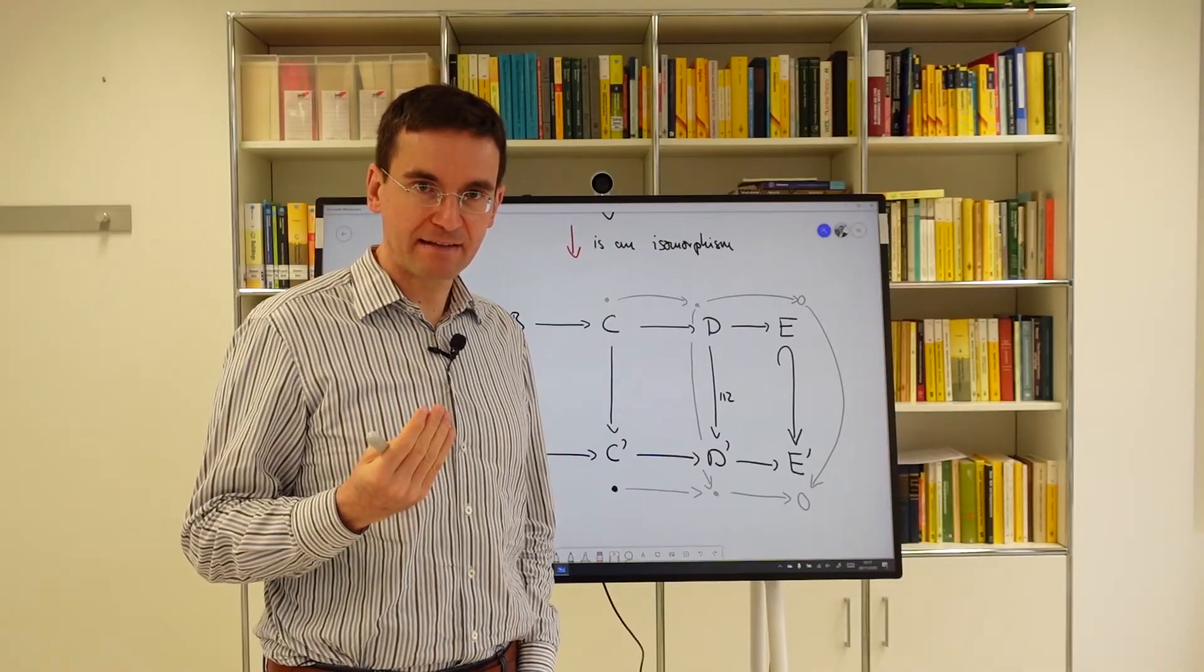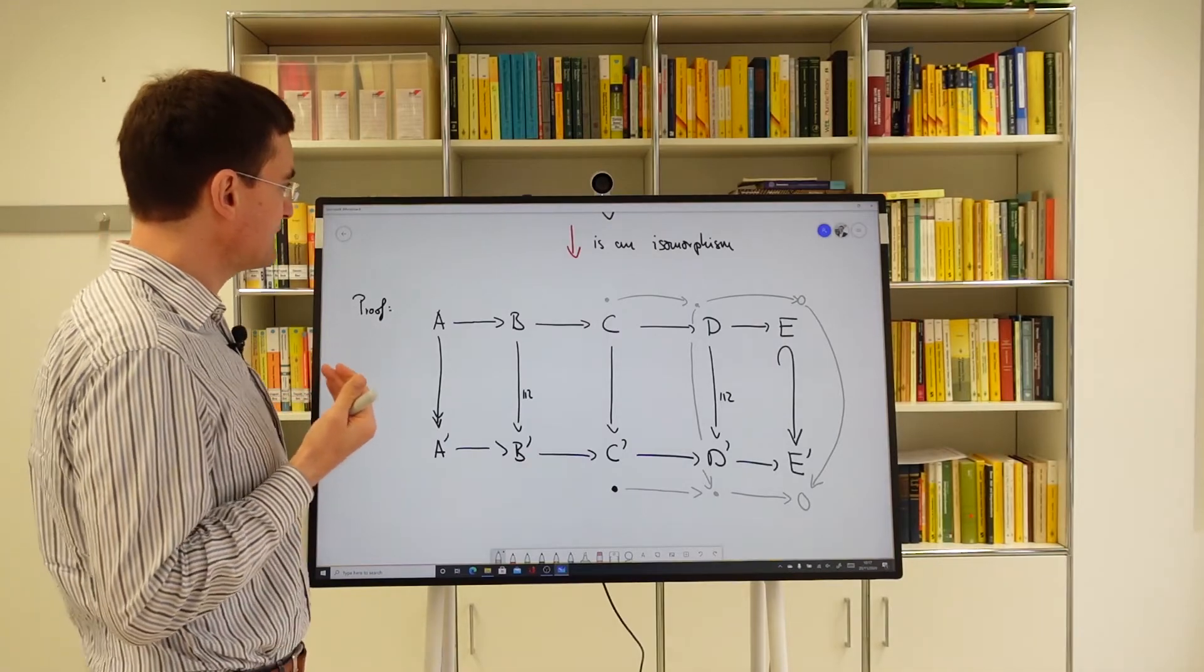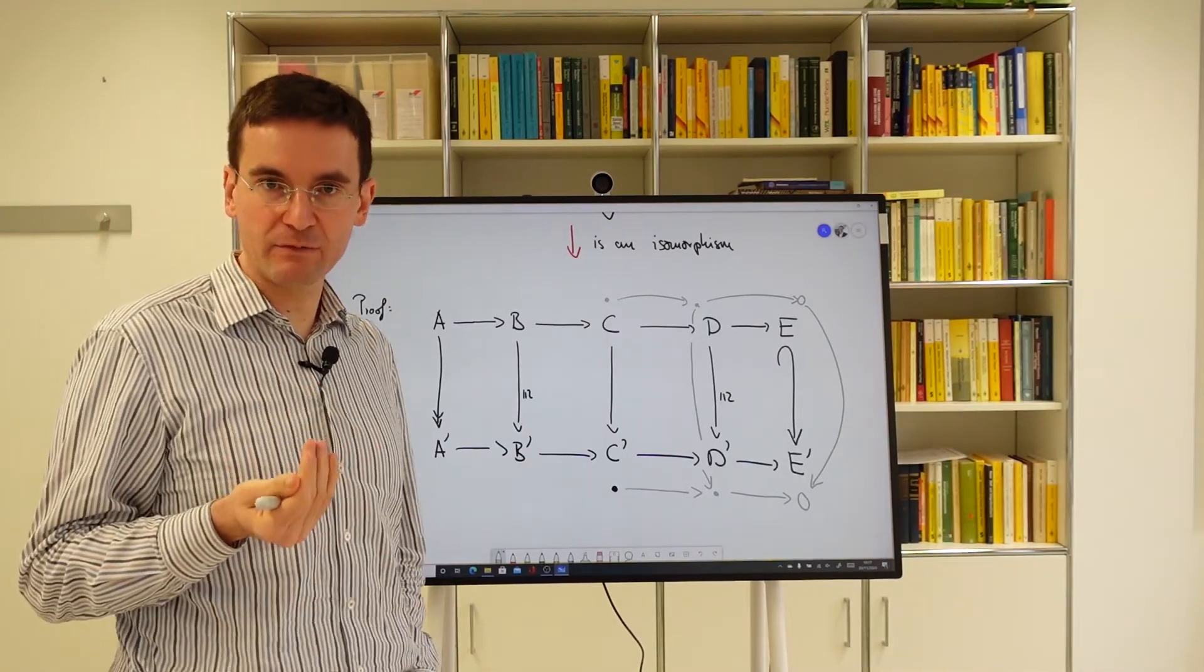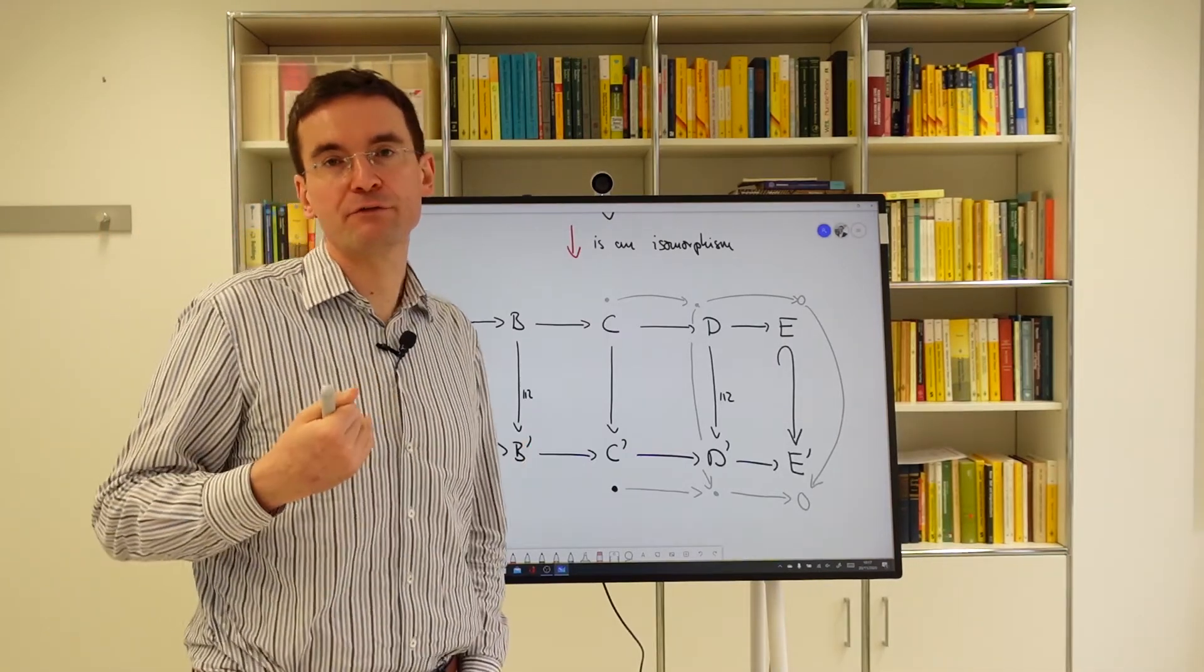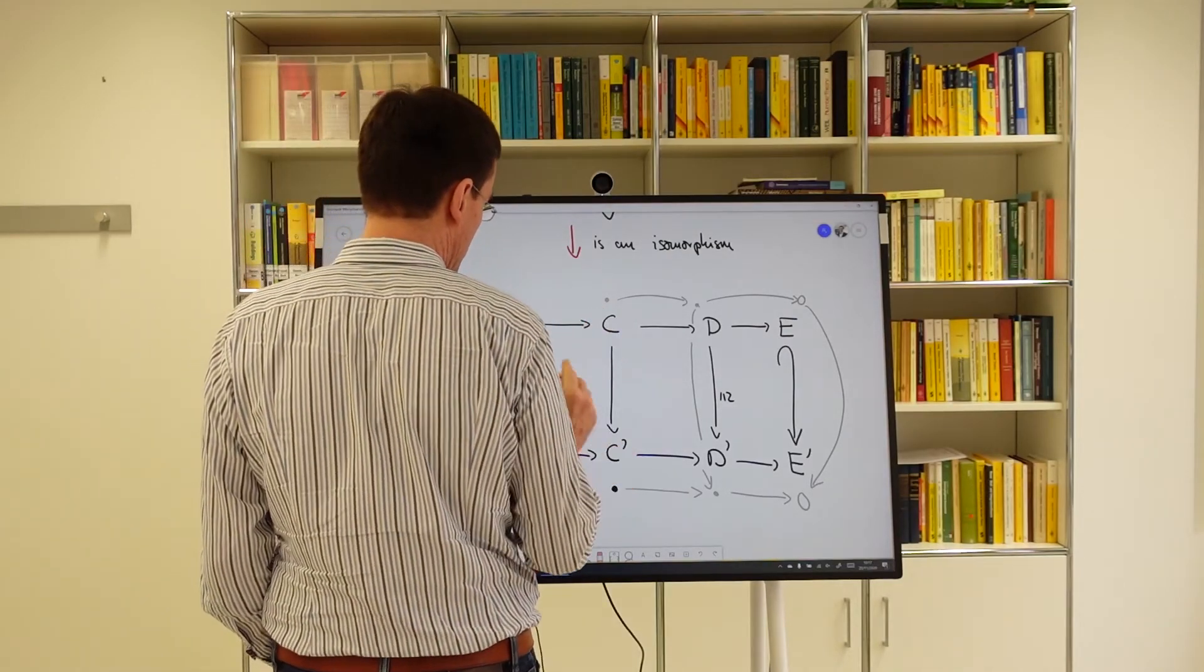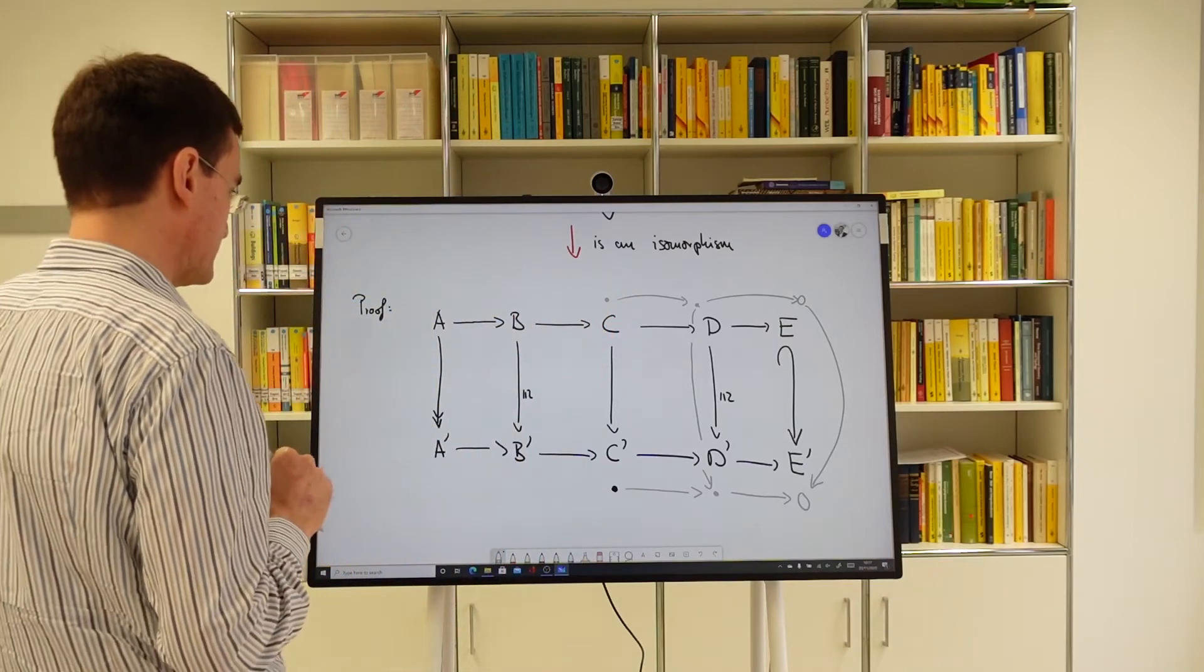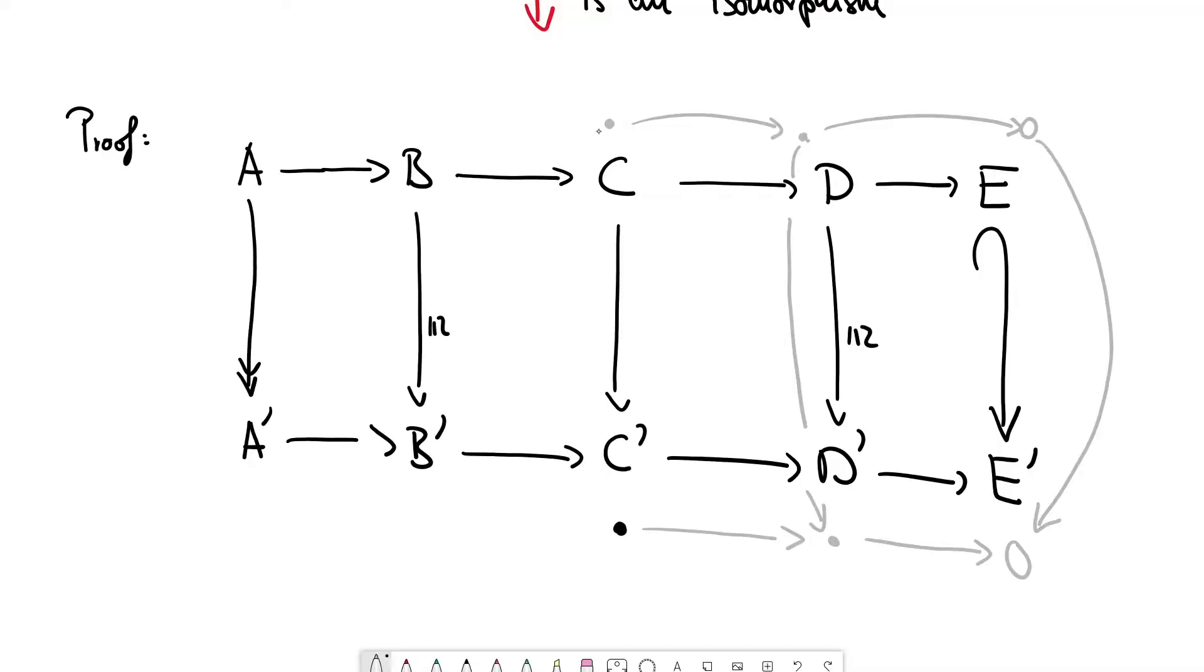It's our best guess so far, but the chances are not so good because, as I said, this element in C was given by a choice. We had to choose a pre-image. So, different choices might be mapped to different elements in C prime. So, it's not very likely that this is already a pre-image of the black element. But in any case, we can move it down and get an element which, maybe I draw this in blue.